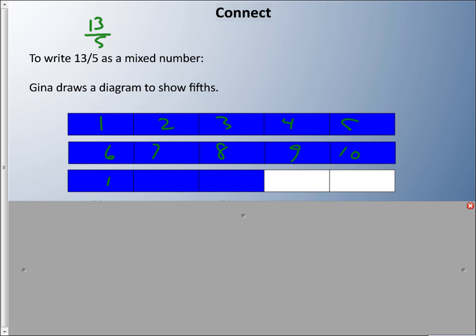There's two whole ones here: one, two. That means I have two wholes and how many pieces? One, two, three left over. And there's five in a whole, so two and three fifths.